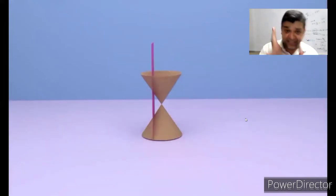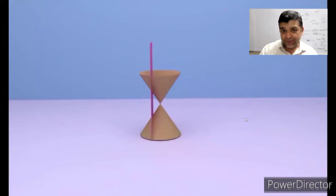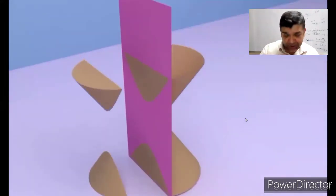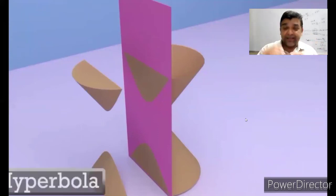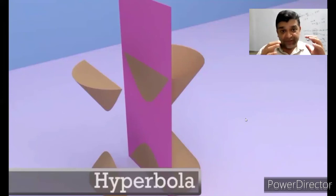And now when my cutting plane is exactly vertical, the section of the cone which I observe is these two u-shapes called a hyperbola. So by cutting cones using a cutting plane at different angles, we get different sections of cones.